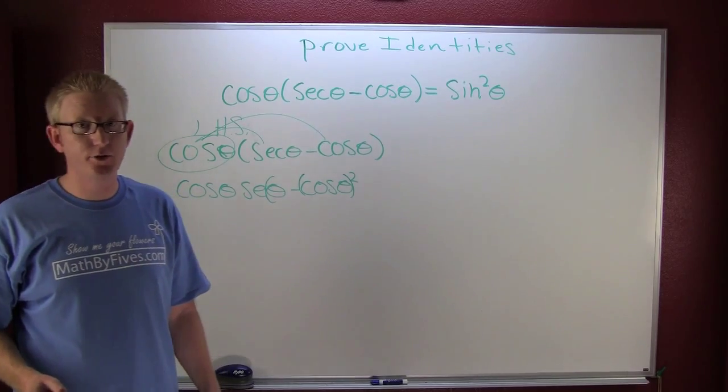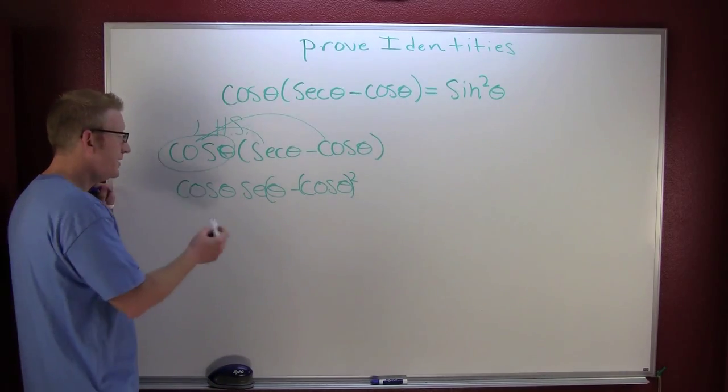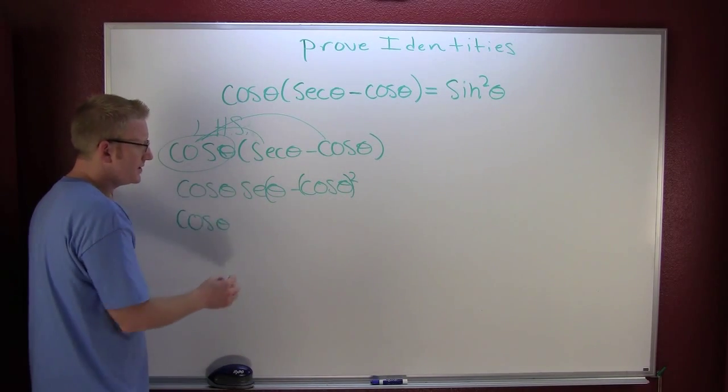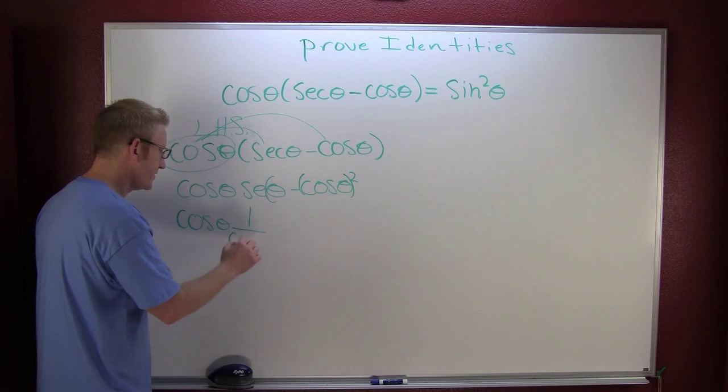Transform into sines and cosines. If you ever get stuck, that's one way to start it off. So the cosine of theta. What's the secant? One over the cosine of theta. I'm no longer stuck.